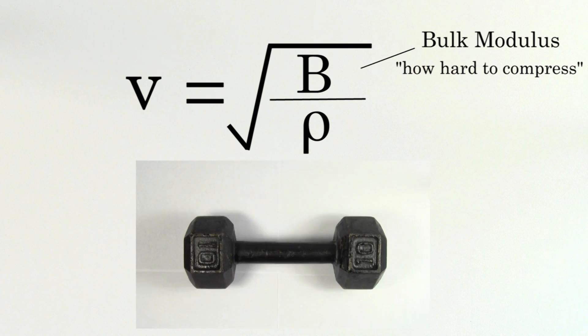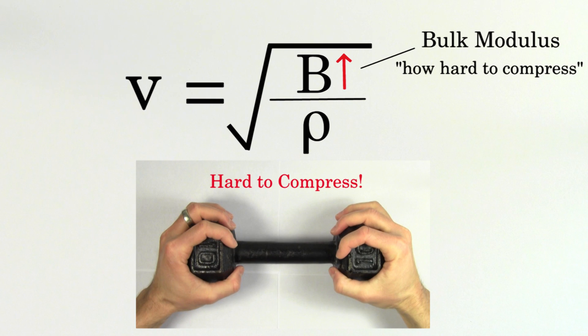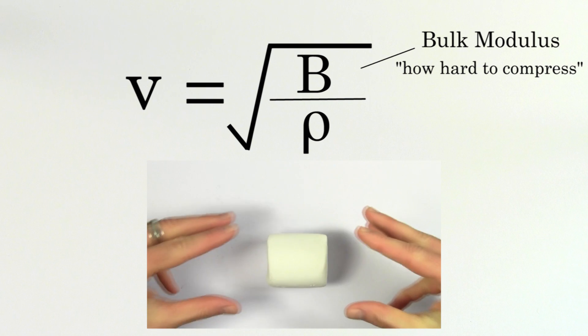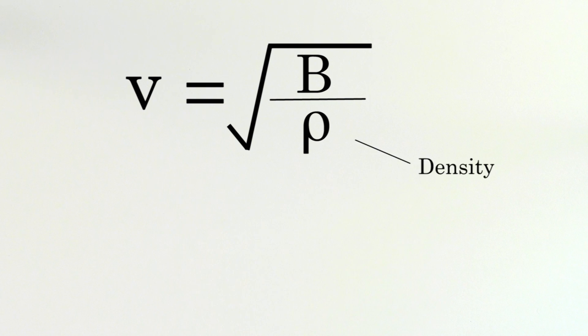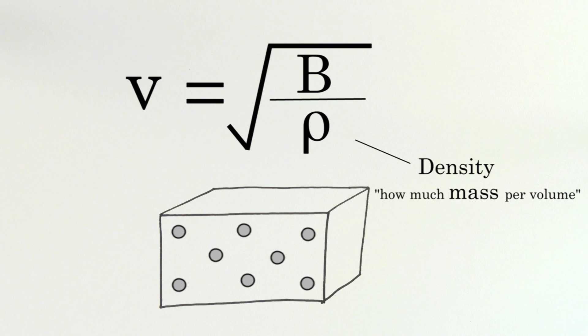Stiff, rigid materials like metal would have a large bulk modulus, and more compressible materials like marshmallows would have a smaller bulk modulus. Rho is the density of the material. Since density is the mass per volume, the density gives you an idea of how massive a certain portion of the material would be.